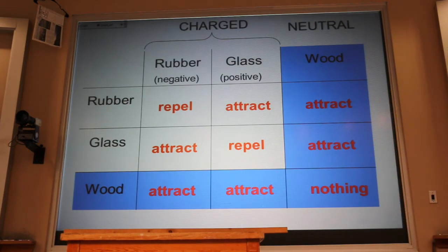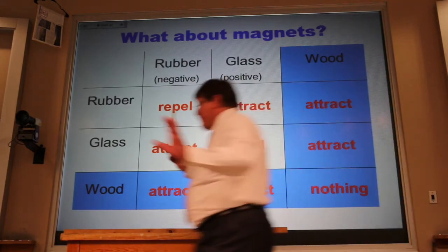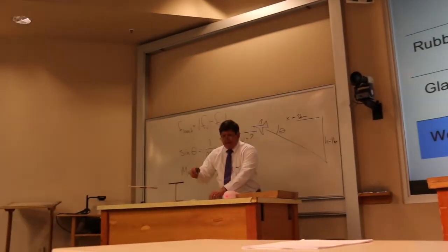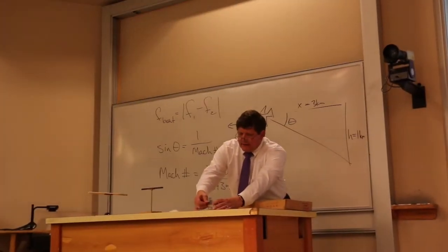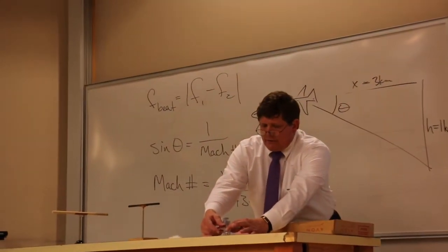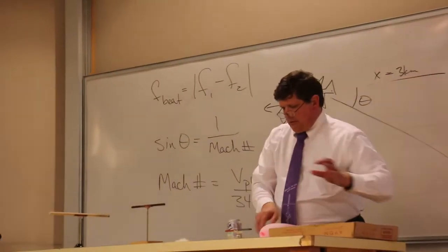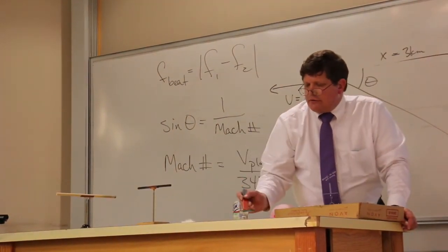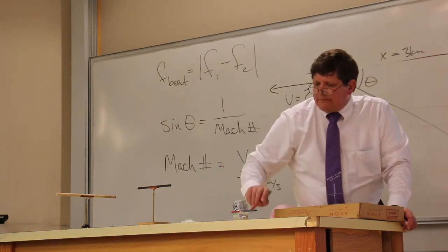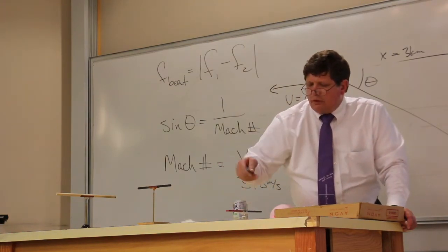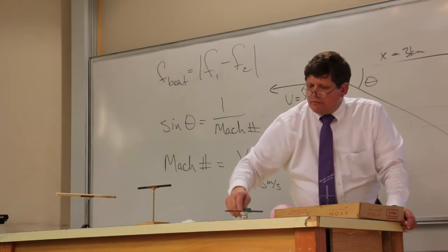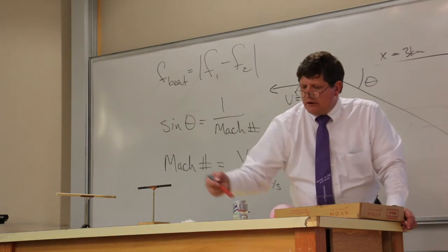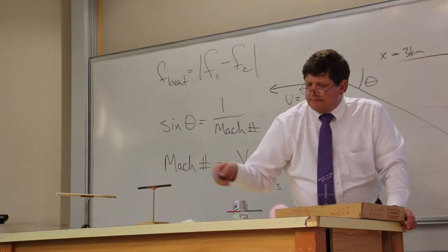But before I go there, what about magnets? I have here a bar magnet and it's got a red end and a blue end. We call the red end the North Pole and the blue end the South Pole. We see that two red poles or two North poles repel. We also see that two blue poles repel, and we see that a red pole attracts a blue pole and vice versa.